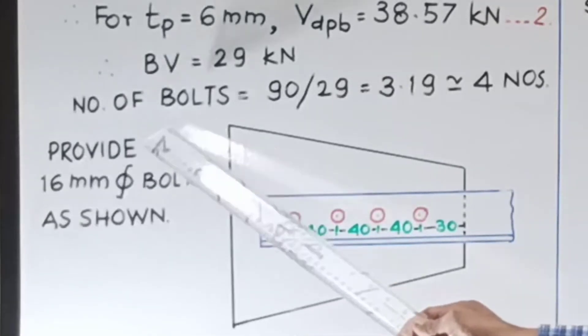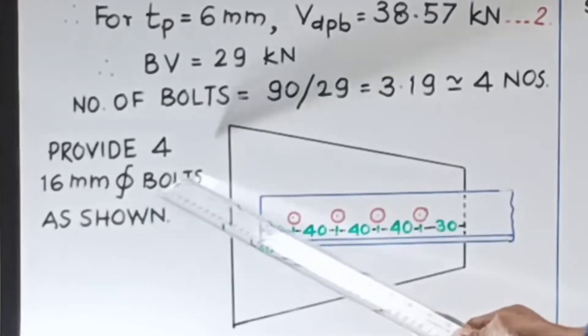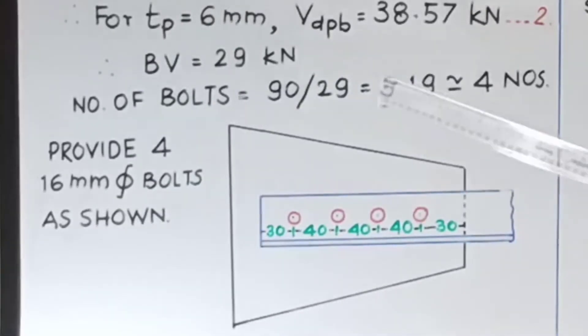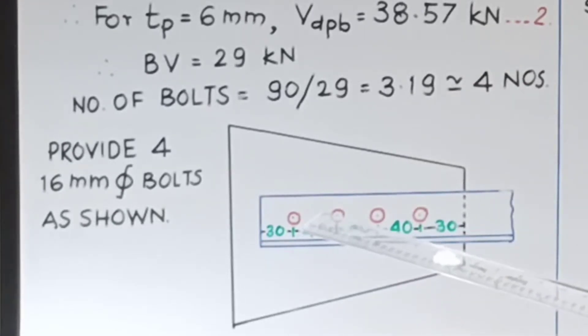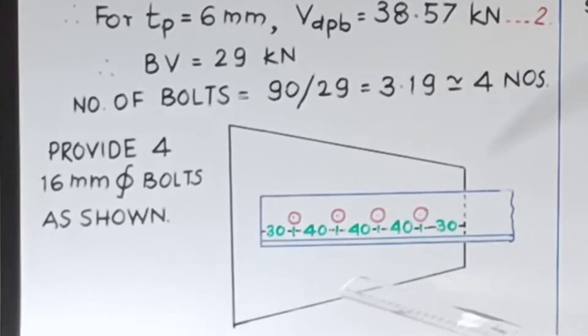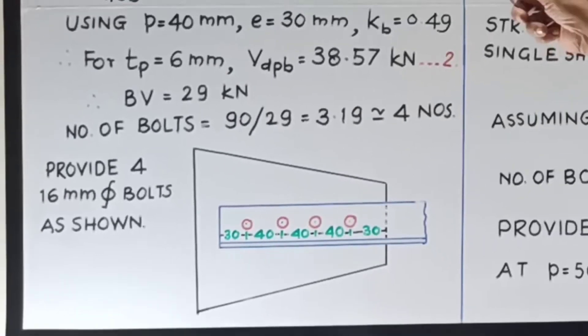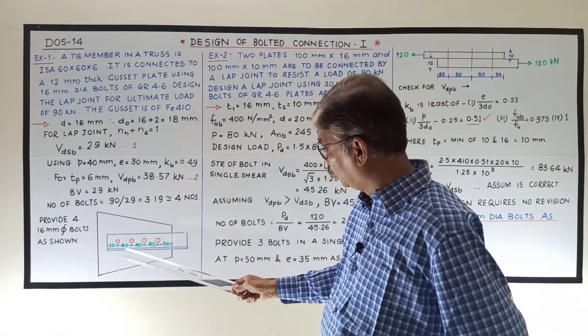Therefore, provide 4, 16 mm diameter bolts as shown. So this is a gusset plate, this is the angle section. These 4 bolts are shown in one line. This is edge distance, this is edge distance or end distance you can say. This is pitch, this is pitch and this is pitch. So this is the simple problem of lap joint of our angle section to the gusset plate.